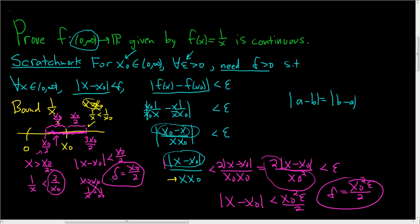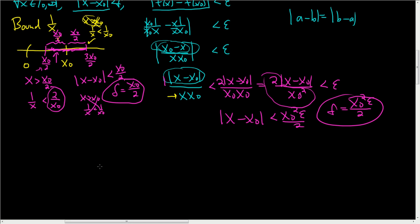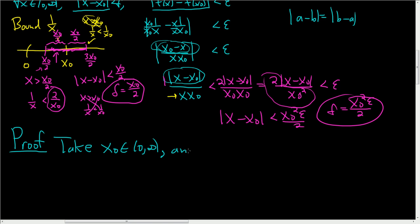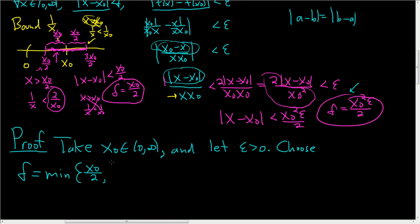So we'll take delta to be the minimum of the two conditions. Now let's do the formal proof. Take any x naught in our interval and let epsilon be greater than 0. Choose delta to be the minimum of x naught over 2 and x naught squared · epsilon over 2.